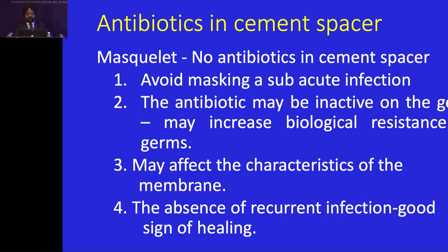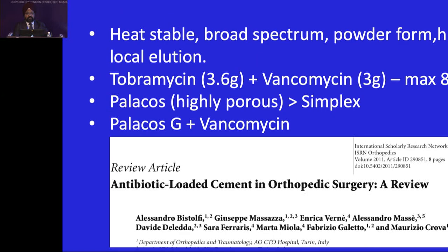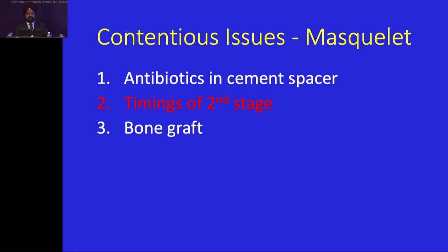According to Masquelet, he didn't add antibiotics to the cement spacer. The reason being it masks the acute infection or it may be inactive on the germs, which may increase biological resistance. Also it may affect the characteristic of the membrane, and the absence of recurrent infection is actually a good sign of healing. What antibiotics and which cement to use? We usually use heat stable, broad spectrum antibiotics in powder form, with high local concentration. The preferred antibiotic combination is Tobramycin and Vancomycin — maximum 8 grams. We prefer Palacos, which is highly porous. We add Vancomycin 4 grams per 40 grams.